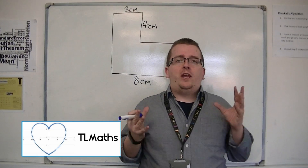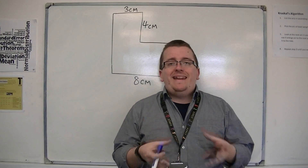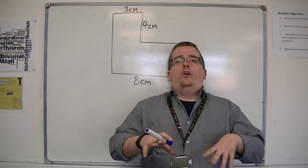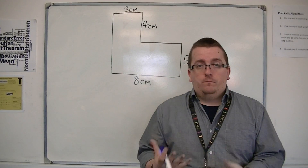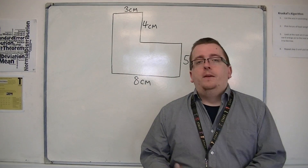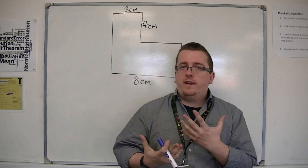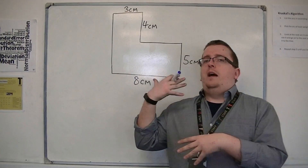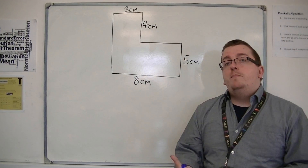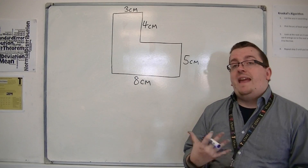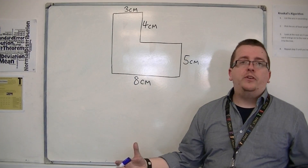A compound shape is a shape that is made up of more than one other shape. It could be made up of rectangles, triangles, bits of circles, for example, and we might be asked to find the area or the perimeter of such a shape.